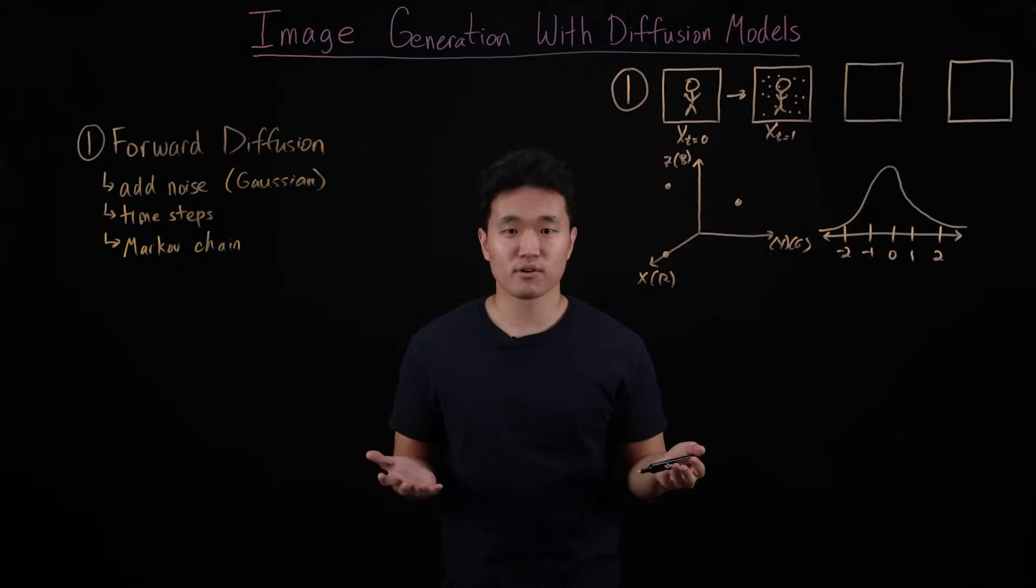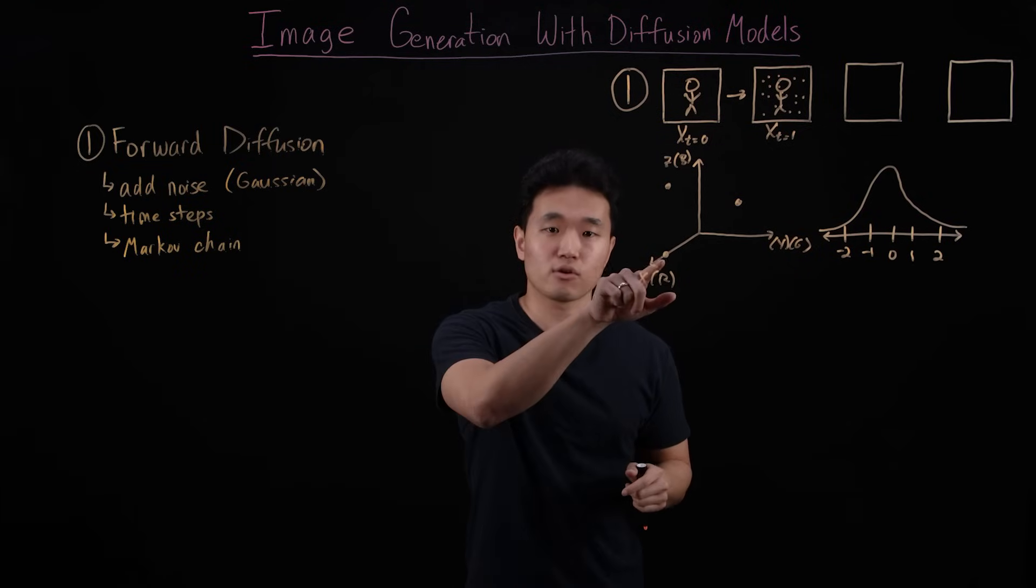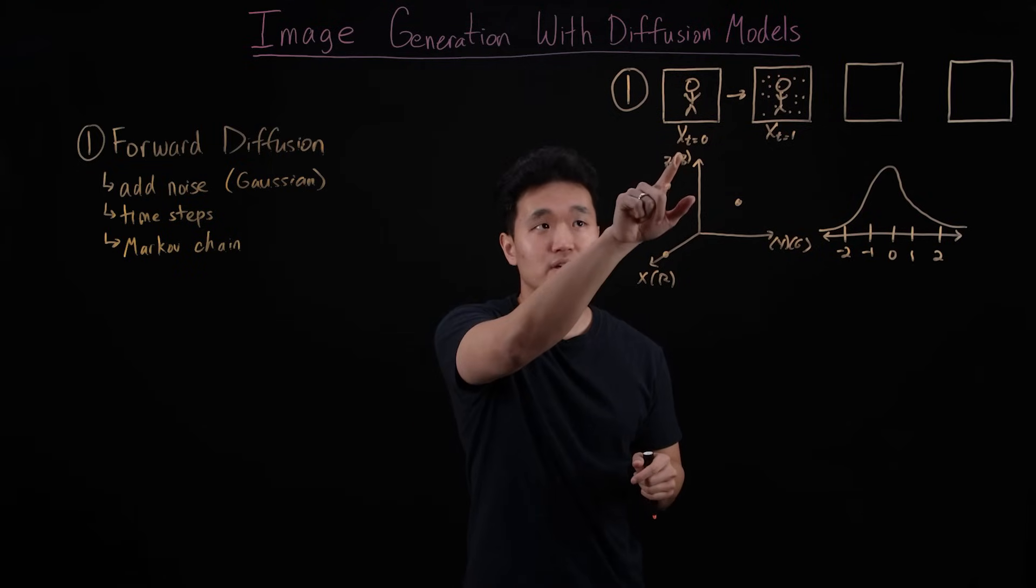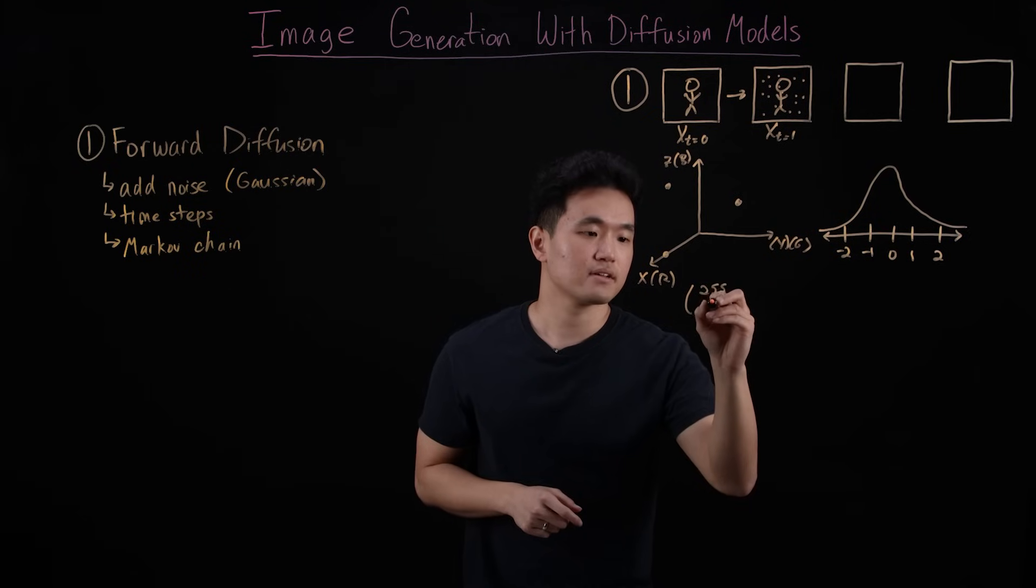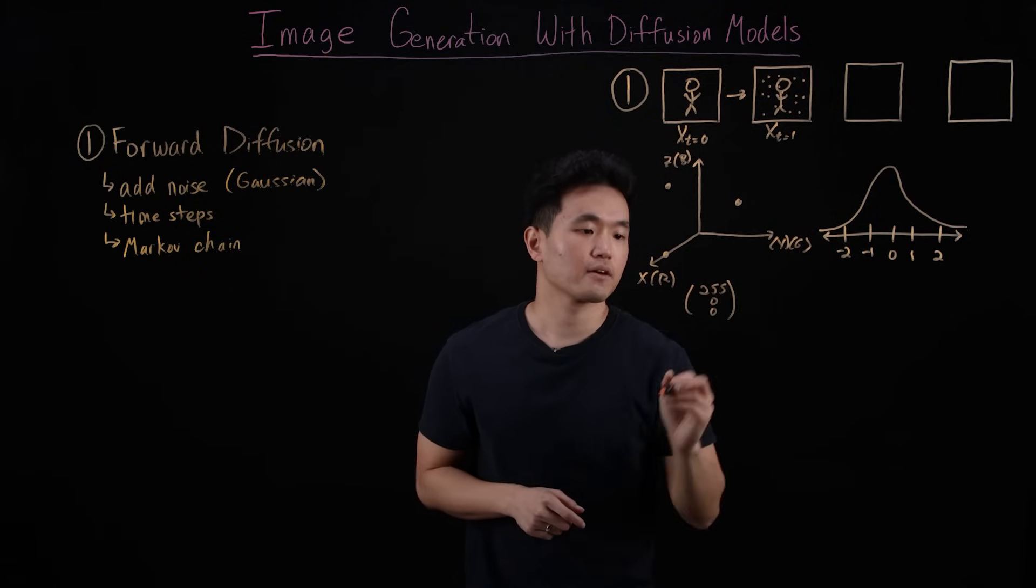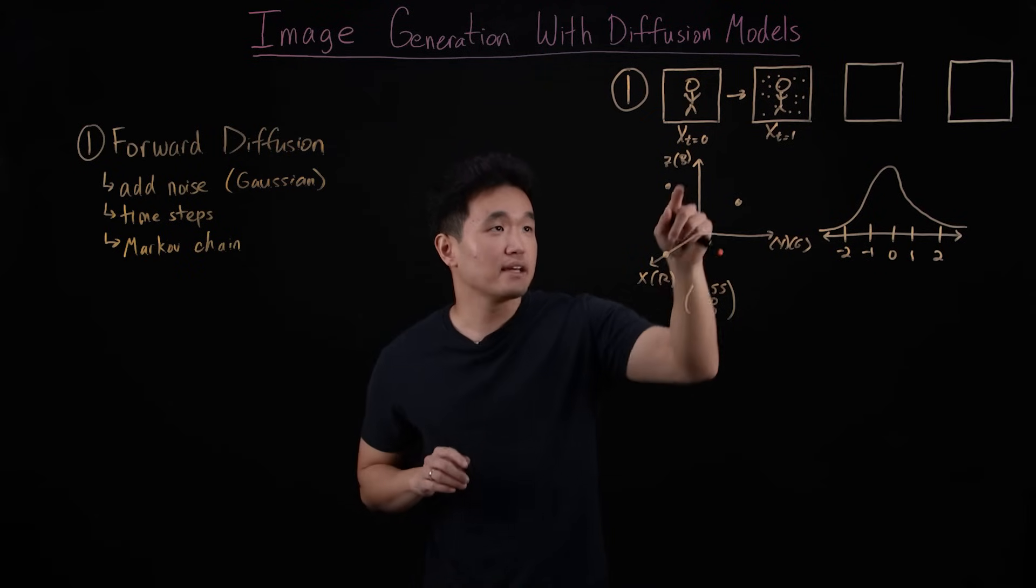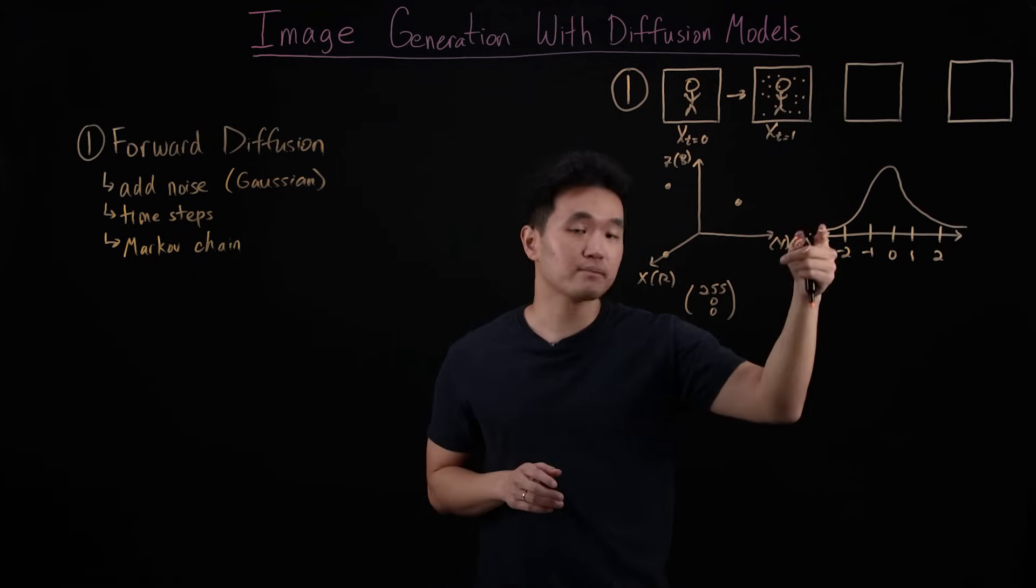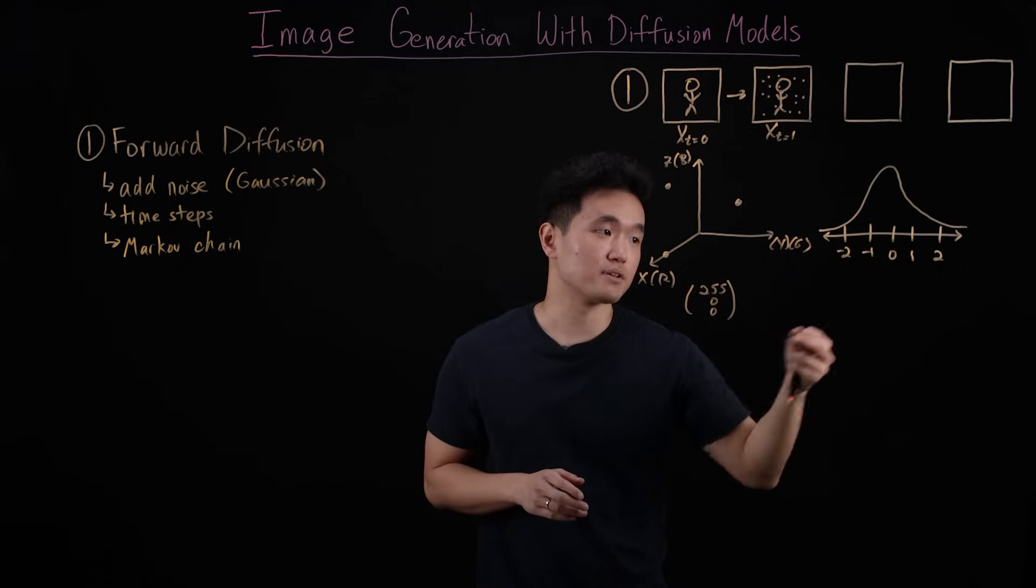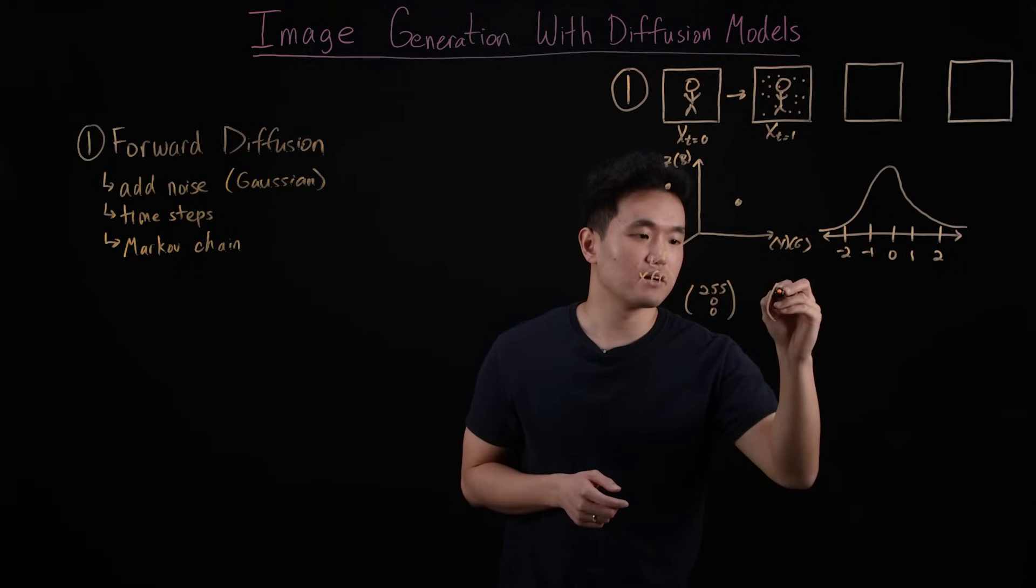So to make this more concrete, let's look at this pixel in particular. The color coordinates of this pixel in the original image at time zero start off at 255, zero, zero, corresponding to the color red, pure red. Now as we add noise to the image going to time step one, this involves randomly sampling values from our Gaussian distribution, and say we obtain random values of negative two, two, and zero.